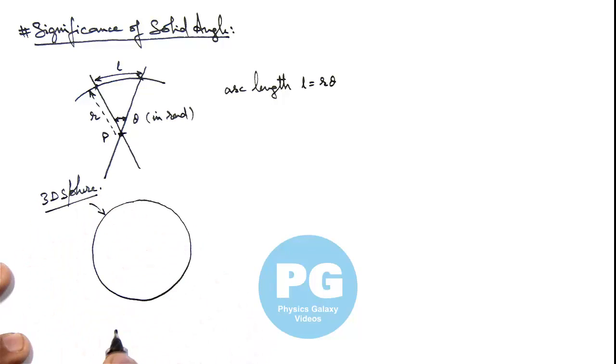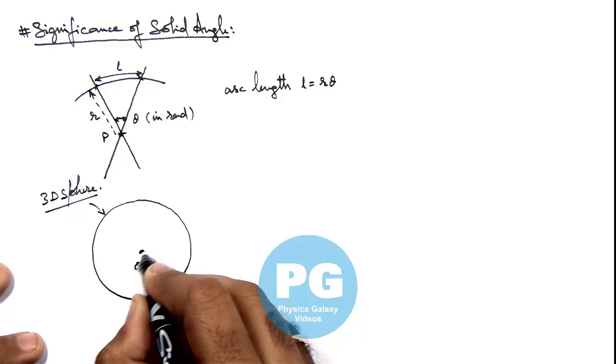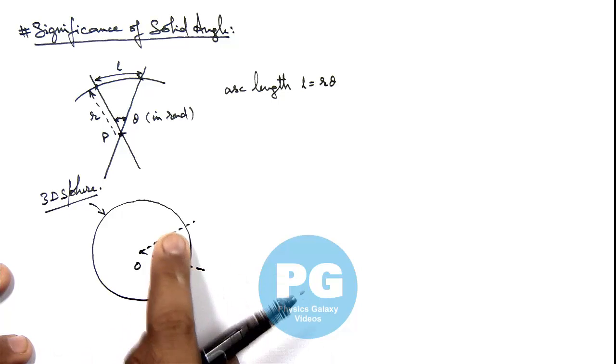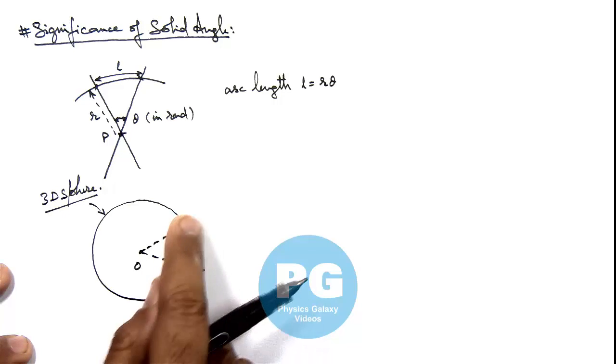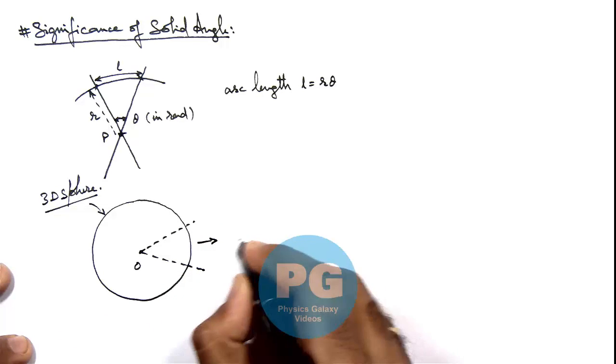In case of sphere, if we consider its center as O, and if we talk about a cone, just imagine a cone inside the sphere. We cut this cone and pull it out. Then in this situation it will look like this.